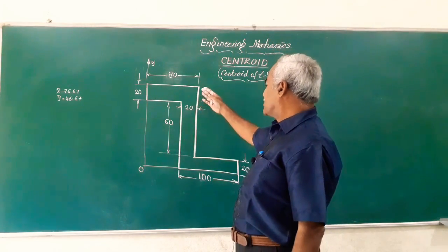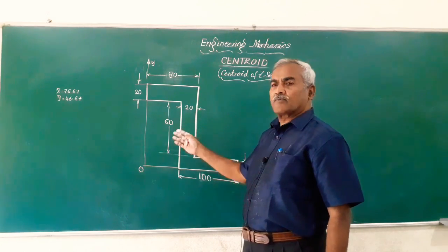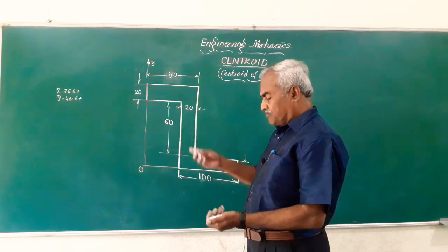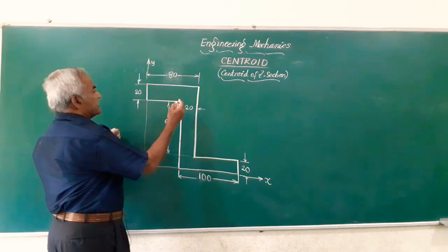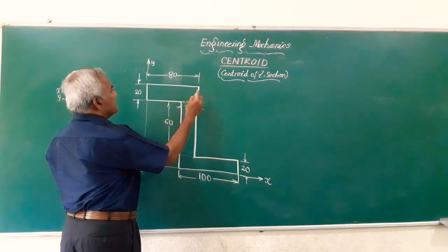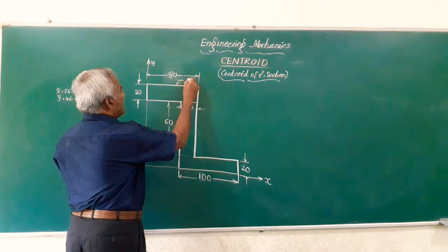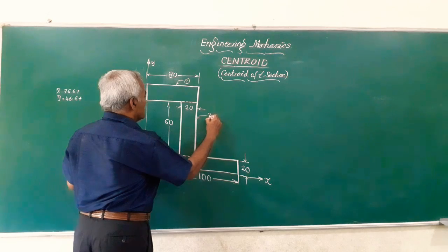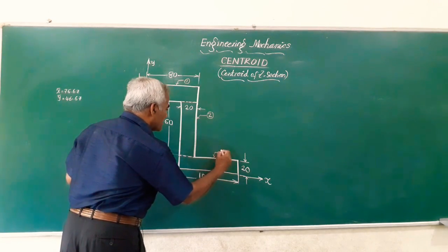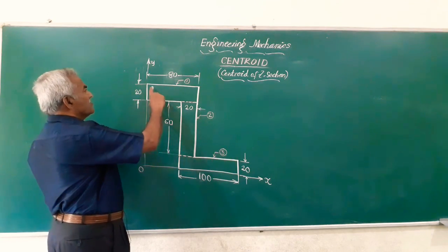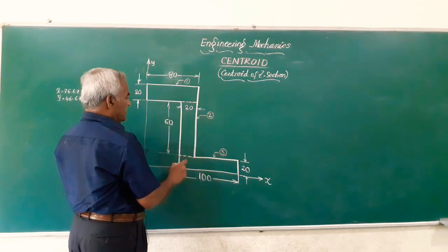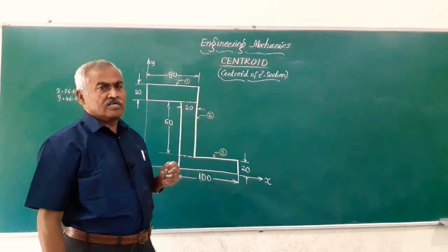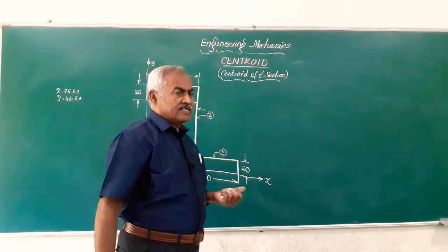Friends, the dimensions of the Z-section are given. You can see this is not symmetrical about the horizontal or vertical axis, so we'll have to locate both x̄ and ȳ here. This cross-section can be split into three rectangles: rectangle one, rectangle two, and rectangle three. The dimensions are 80×20, 60×20, and 100×20 respectively, so all these rectangles have different areas of cross-section.